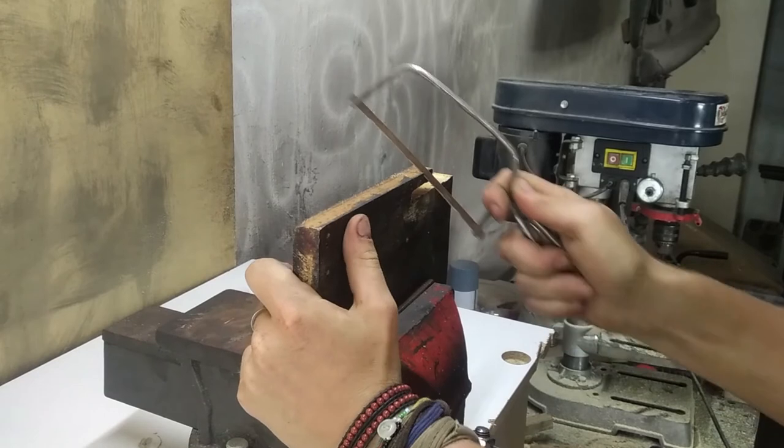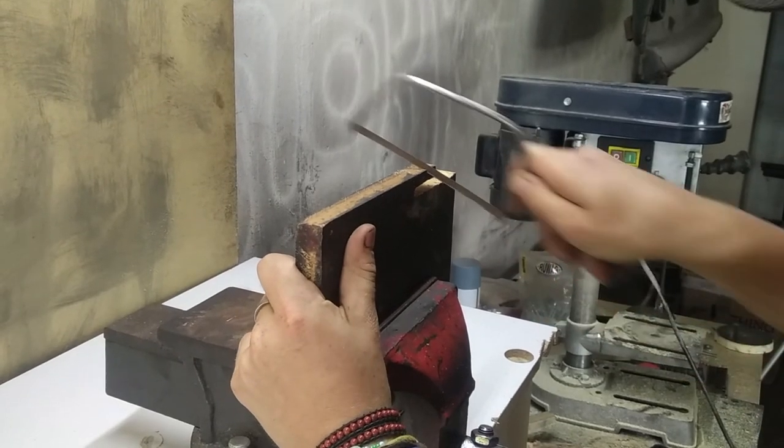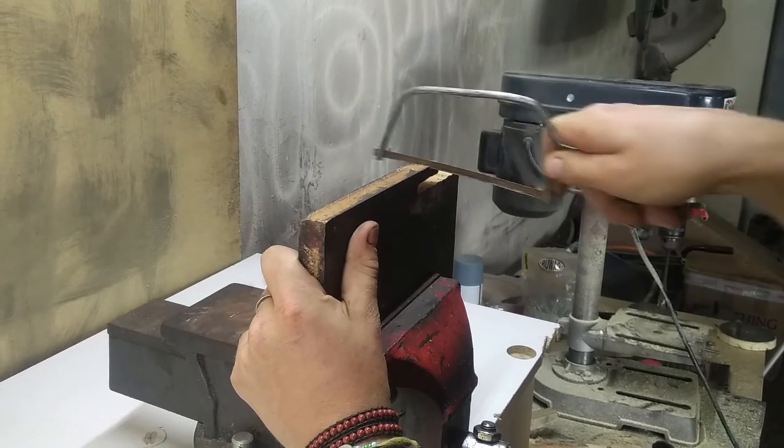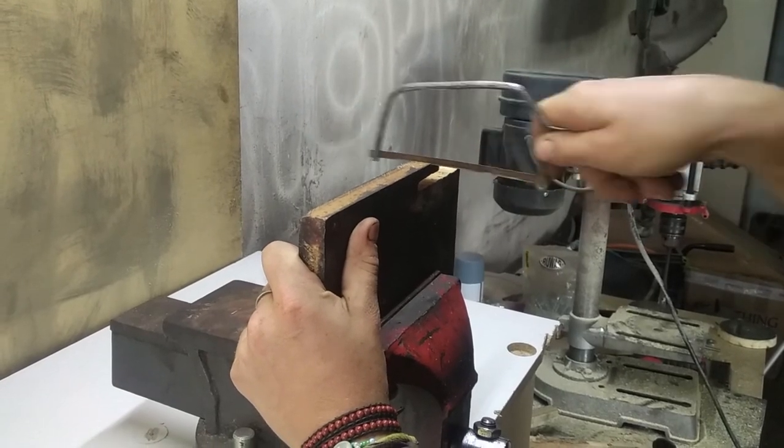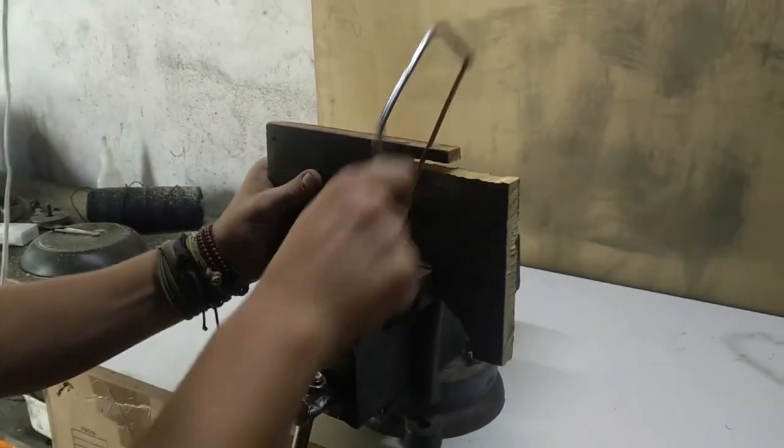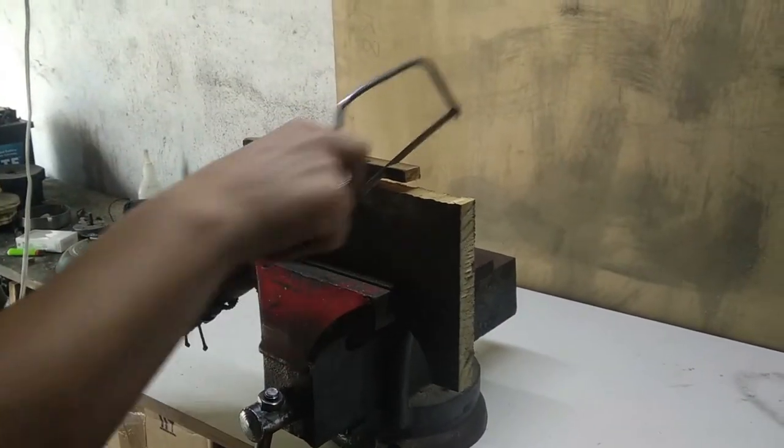Once we've done that we needed to arrange some sort of way of keeping the glass off the bottom of our backflow burner because otherwise the smoke is just going to pool inside the glass and eventually you're not going to be able to see anything inside it.